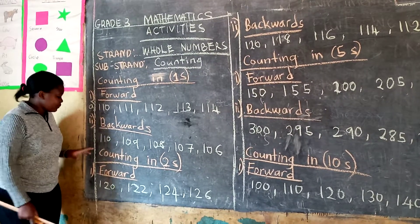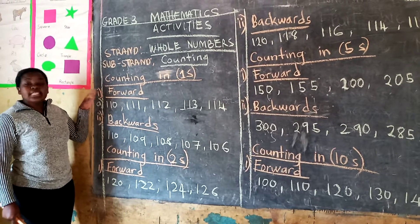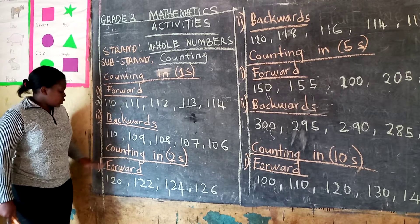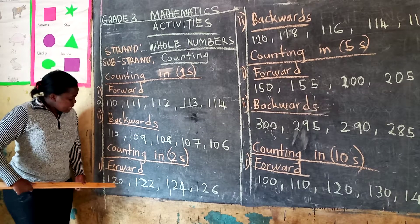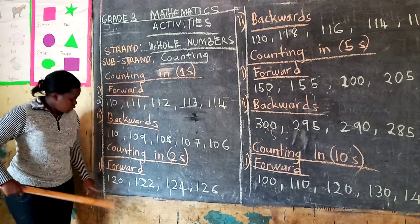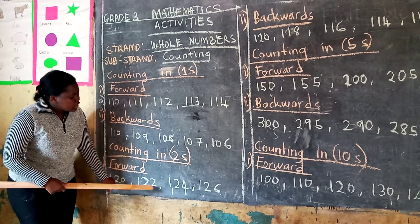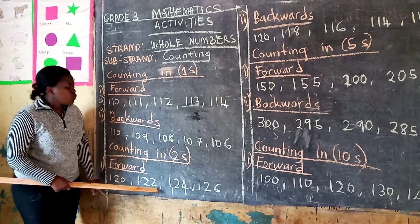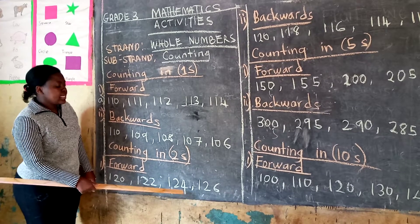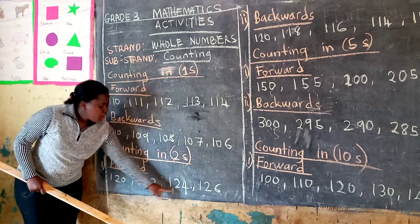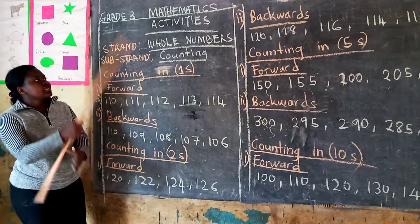I hope you are understanding. Now we are counting in twos, forward. Starting at 120, you add 120 plus 2, you will get 122. You add 122 plus 2, you will get 124. Then 124 plus 2, because you are moving forward, you will get 126.